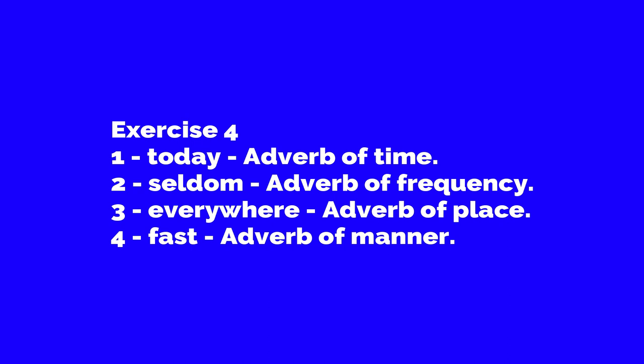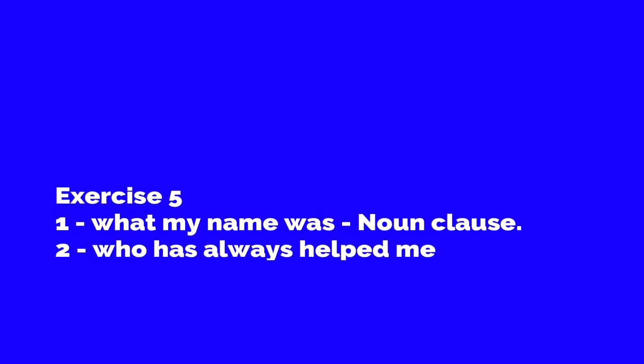In exercise four, underline the adverbs and state their kinds. First sentence: the adverb is an adverb of time. Second: 'The girl seldom visits my house' — the adverb is 'seldom', an adverb of frequency. Third: 'He searched everywhere for the book' — the adverb is 'everywhere', an adverb of place. Fourth: 'The boy runs fast' — 'fast' is an adverb of manner.